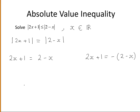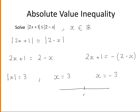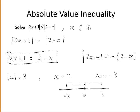A quick reminder of why this is the case: if the absolute value of x is equal to 3, then x could be equal to 3 or x could be equal to minus 3, since the distance from minus 3 to 0 is 3, and the distance from 3 to 0 is also 3. That is why we can say the absolute value of 2x plus 1 equals the absolute value of 2 minus x when 2x plus 1 equals 2 minus x, or when 2x plus 1 equals minus 2 minus x.